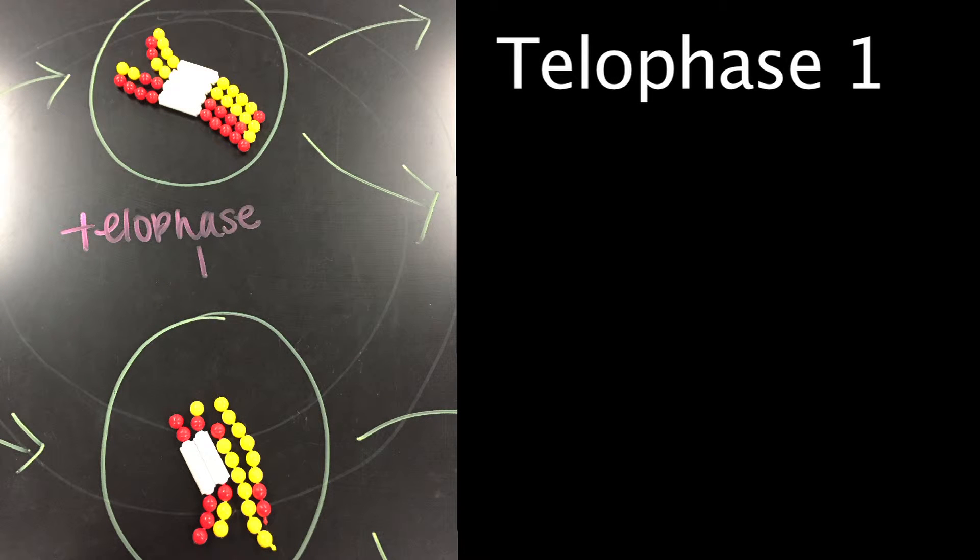Telophase 1 is similar to telophase in mitosis, except that only one set of replicated chromosomes is in each cell. Depending on species, new nuclear envelopes may or may not form. Some animal cells may have a division of centrioles during this phase.